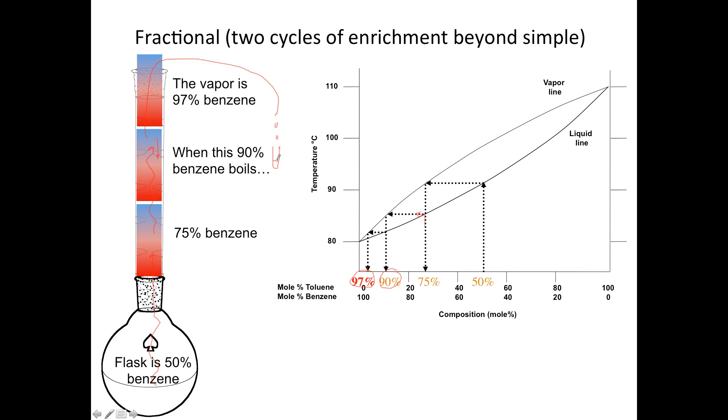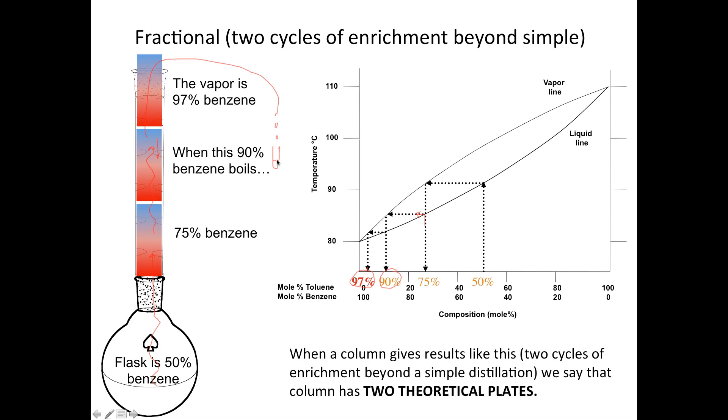This explains fractional distillation, how you can get such greater enrichment than in a simple distillation. When you've got a column that gives the result you see like this, that is two cycles of enrichment beyond a simple distillation, we say that that column has two theoretical plates. So when I start with 50% benzene and get 97% benzene, I know that that column has two theoretical plates because it's two cycles of enrichment beyond the kind of enrichment I get in a simple distillation.